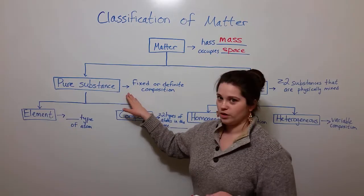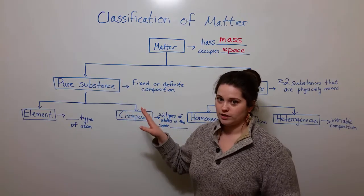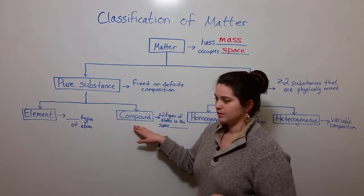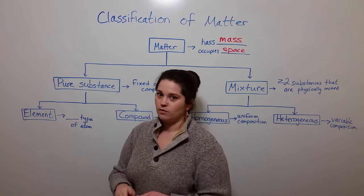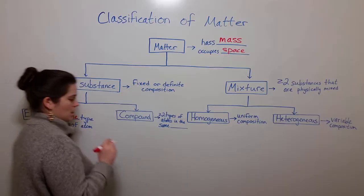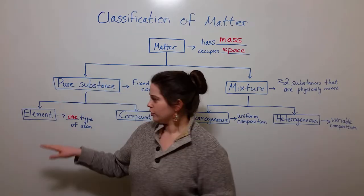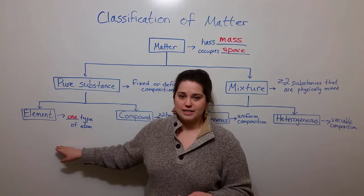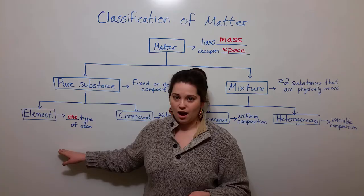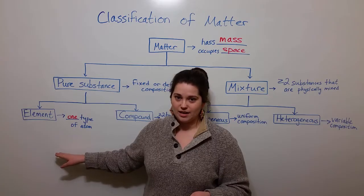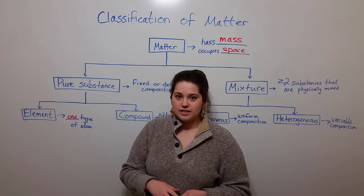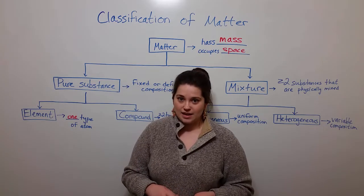First, let's talk about pure substances, which can be further subdivided into two types: elements and compounds. Elements are made up of one type of atom. So these are things I'm sure you've heard of, things like gold, silver, hydrogen, helium, sodium, fluorine, oxygen, chlorine, titanium. These are all examples of elements. Everything that you see on the periodic table is an element.